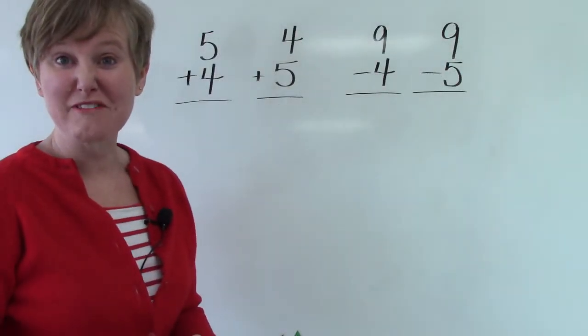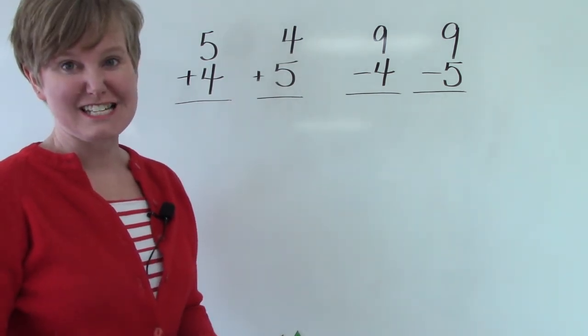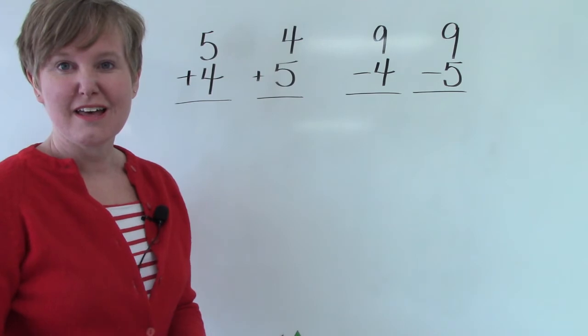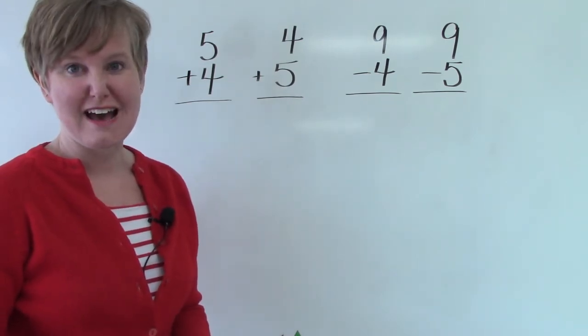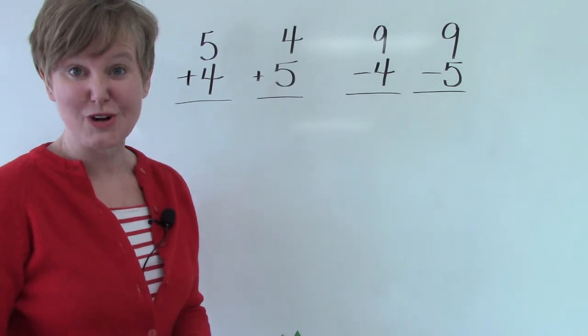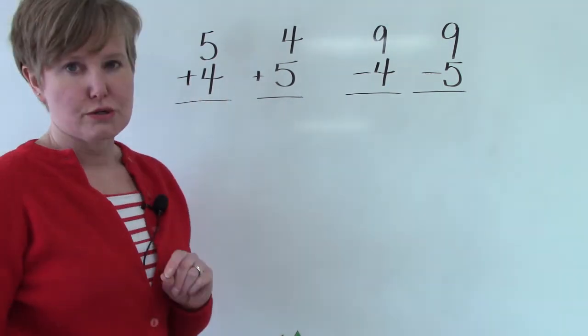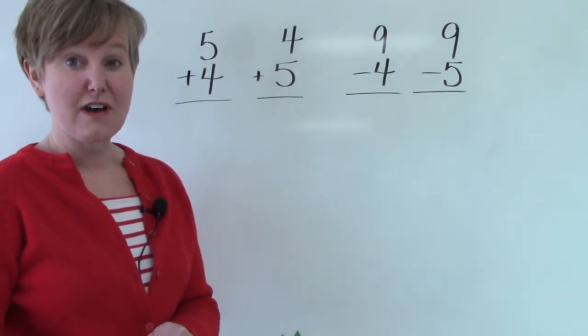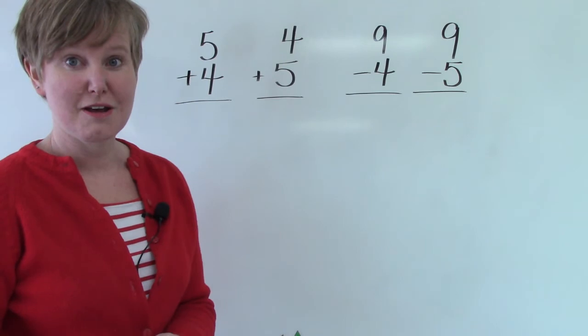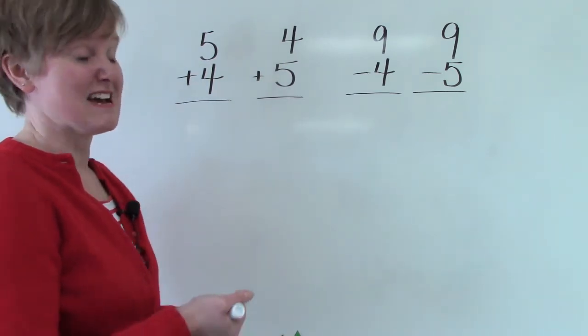We have 4 more facts on the board for you. The first one is 5 plus 4 and then it's 4 plus 5. We know that those are going to have the same answer. We know that in our doubles facts, 4 plus 4 is 8. If 5 is 1 more than 4, what will 5 plus 4 be? You're right. It's 9.